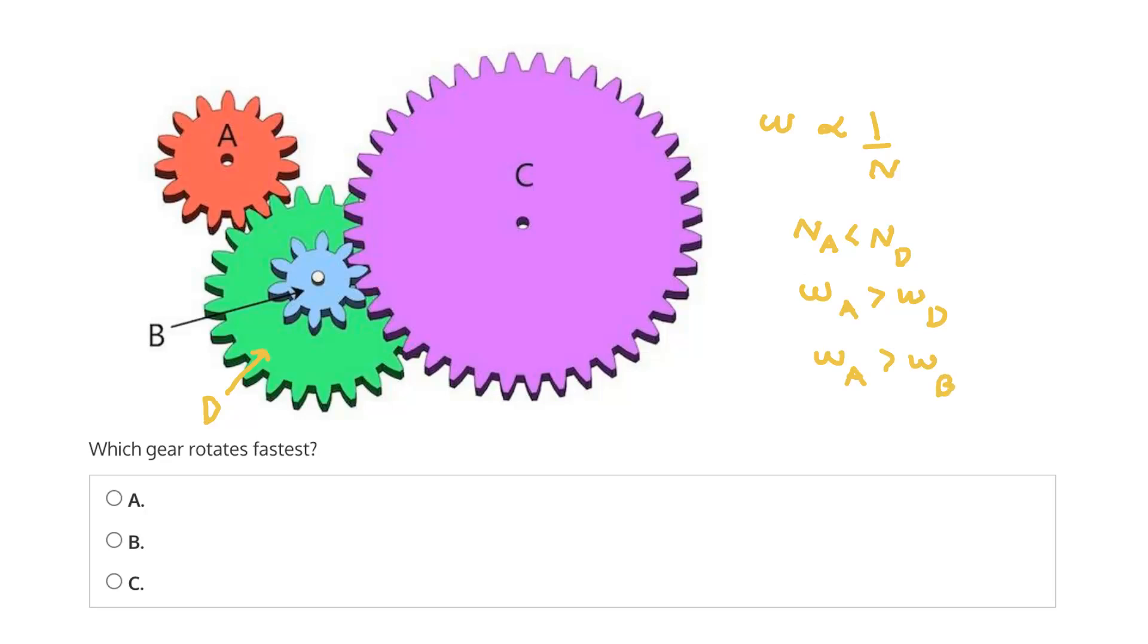So now we need to only consider the relative speed of gear C. And we can do that by applying the same principle. Again, we know that the rotational speed of the gear is inversely proportional to the number of teeth. And we see that gears B and C are directly meshed.